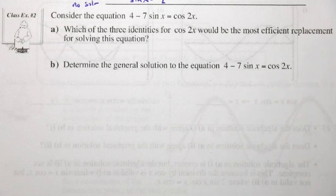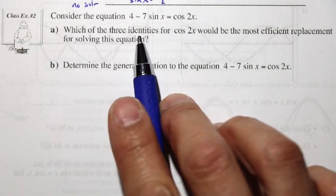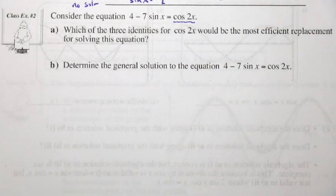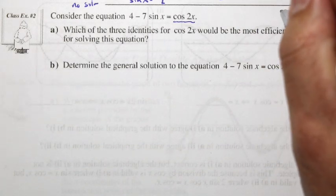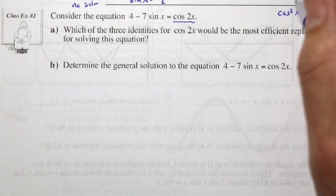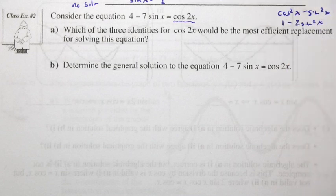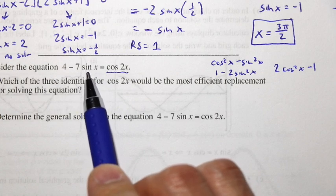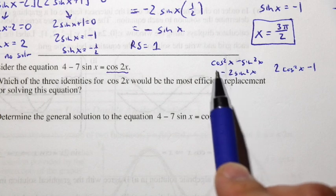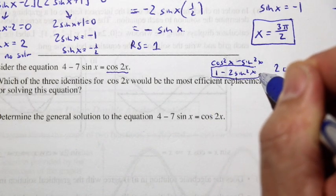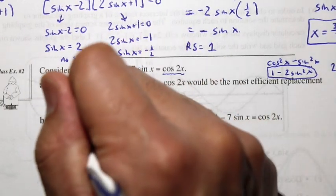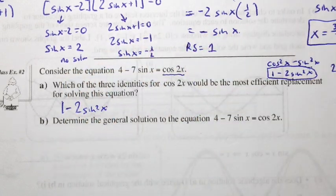Class example 2: 4 - 7sin x = cos 2x. The first question is which of the three identities for cos 2x is the most efficient. The three options are cos²x - sin²x, 1 - 2sin²x, and 2cos²x - 1. Since we already have sine on the left side, the most useful identity is 1 - 2sin²x, because it only involves sines.